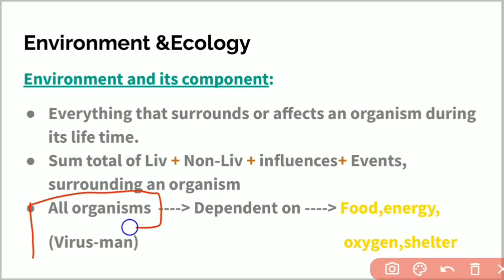All organisms need food, energy, water, oxygen, and shelter. That is why there is a need for an organism to have an environment.